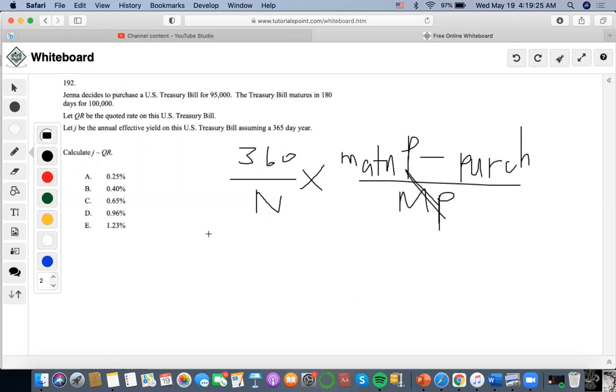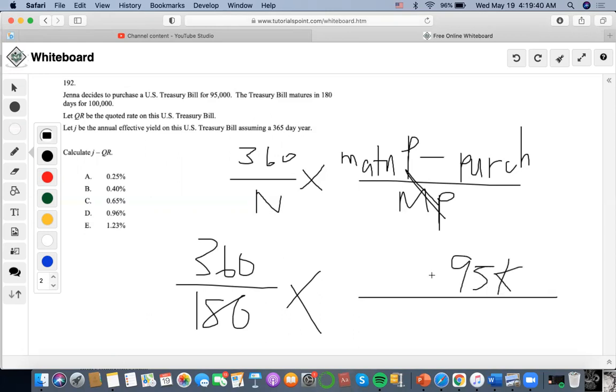Now, they give us 180 days to maturity. So 180 here times, they decide to purchase it for $95,000. And then, it matures in $100K.